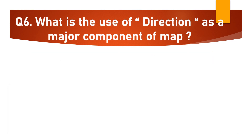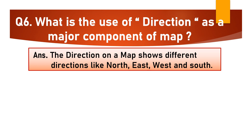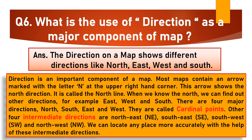Question No. 6: What is the use of direction as a major component of a map? Direction on a map shows different directions like north, east, west and south. Most maps contain an arrow marked with the letter N at the upper right-hand corner — this arrow shows the north direction and is called the north line. When we know the north, we can find out other directions. There are four major directions — north, south, east and west — and they are called cardinal points.